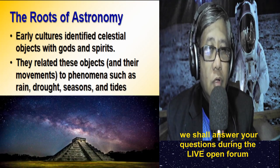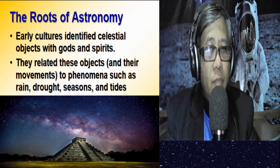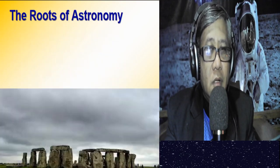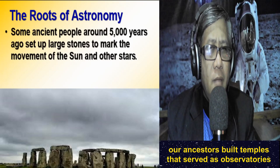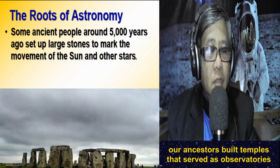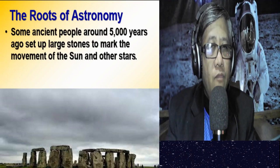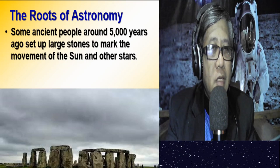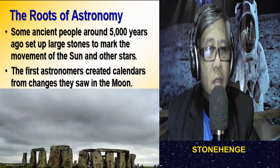You can see the importance of tracking accurately the movements of these celestial objects. What our ancestors did in order to track the movements of the sun, the moon, and the stars was to start erecting large stones. Around 5,000 years ago, they set up large stones to mark the movement of the sun and other heavenly bodies. One good example is Stonehenge, and by tracking these movements, these first astronomers created calendars based on the motion of the moon.